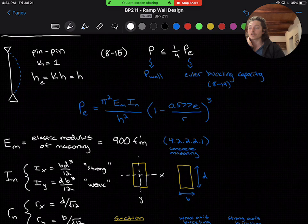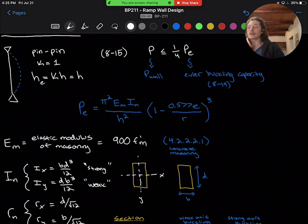This also warrants us calculating an R, our radius of gyration, RX and RY, for strong and weak axes, so we can check them both for buckling.